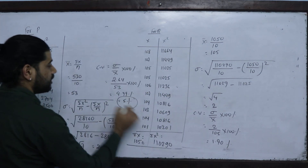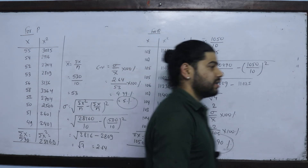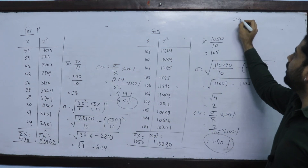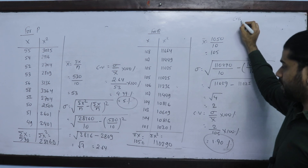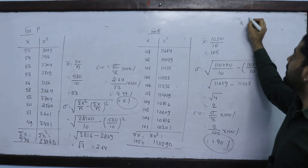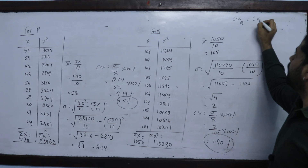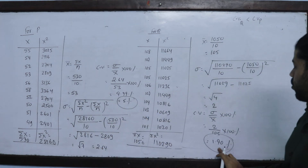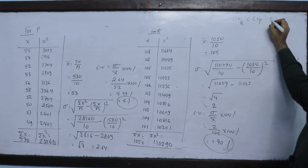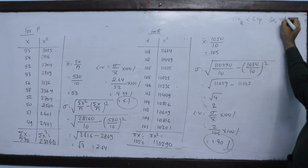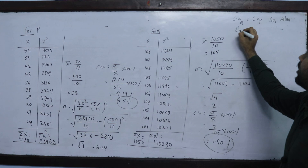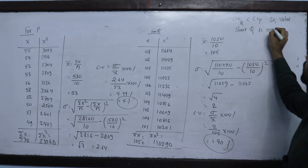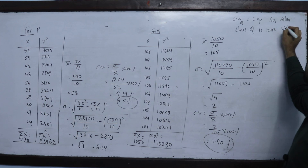Comparing the two: CV of P is approximately 5%, CV of Q is approximately 1.90%. Since CV of Q is less than CV of P, share Q is more stable. Therefore, the value of share Q is more stable. Thank you.